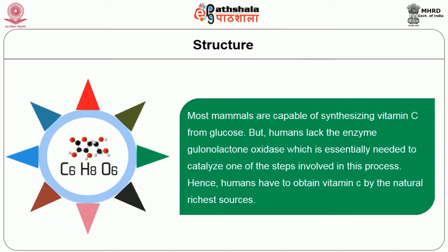Most mammals are capable of synthesizing vitamin C from glucose. However, humans lack the enzyme gulonolactone oxidase, which is essentially needed to catalyze one of the steps involved in this process. Hence, humans have to obtain vitamin C from natural dietary sources.